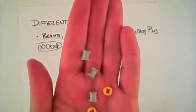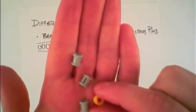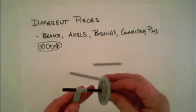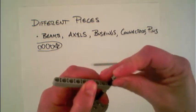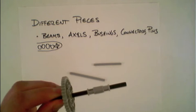Bushings are these pieces that are either full bushings or these little yellow half bushings, and those are really helpful when attaching beams onto the axles to hold them in place, as well as create spacers if you're combining multiple things together.